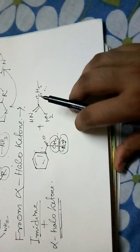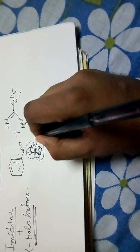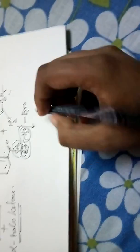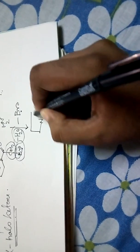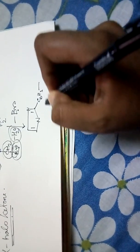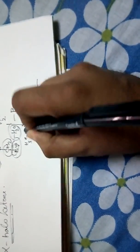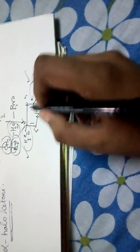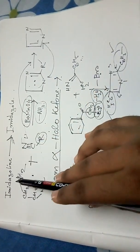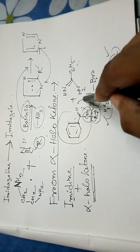When the alpha-halo ketone reacts with the imidine derivative, bromine and water are eliminated from the reaction. This produces a substituted imidazole structure where the two position contains a phenyl group and the four position also contains a phenyl group. We have now discussed two synthesis methods: from the imidazoline ring to imidazole, and from alpha-halo ketone to imidazole derivative.